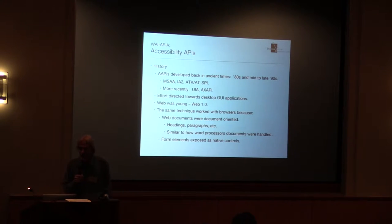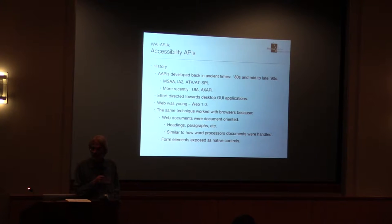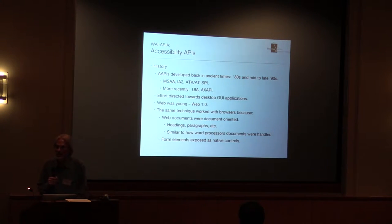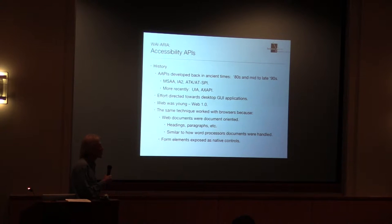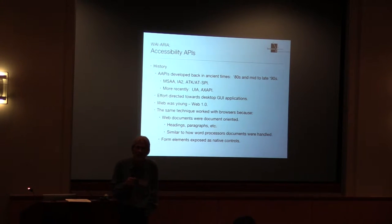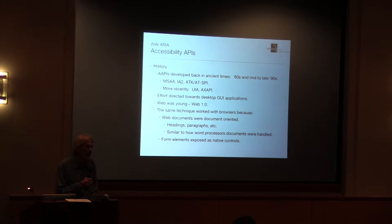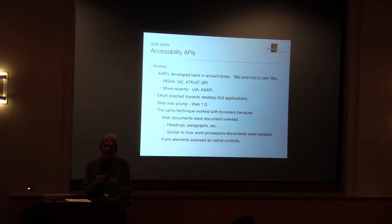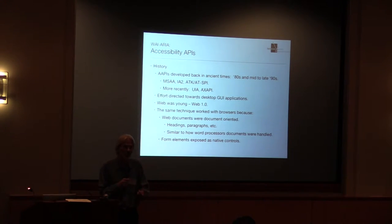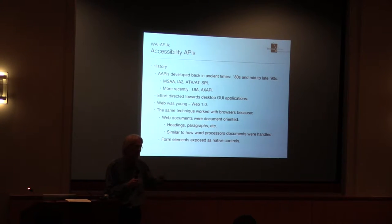Back in the 80s and mid-to-late 90s, the effort was to develop accessibility technology for the desktop — to make desktop GUI applications accessible. Back then the web was young, so-called Web 1.0. You could use the same techniques for desktop GUIs with the web, because web documents were primarily document-oriented: headers, paragraphs, a few images. Any interactivity was limited to links and form controls, and those form controls were actual native controls — a Windows checkbox on Windows, a Mac checkbox on Mac — so they automatically became accessible.